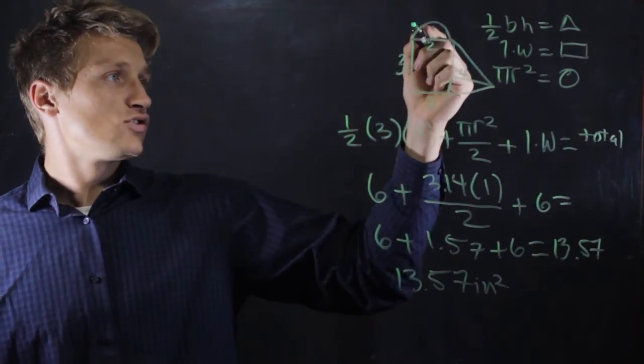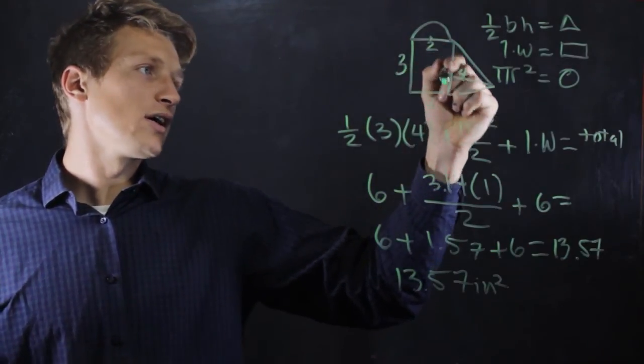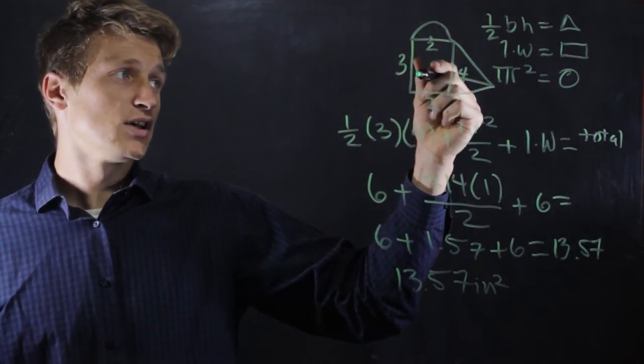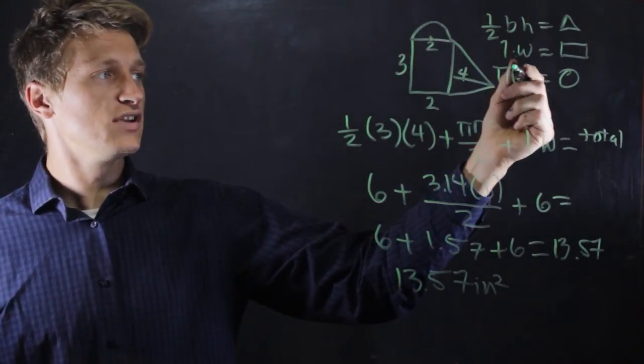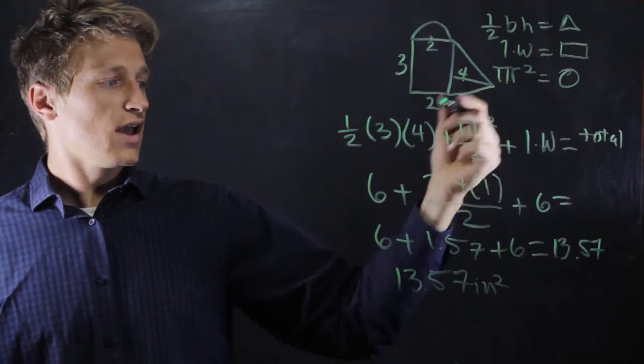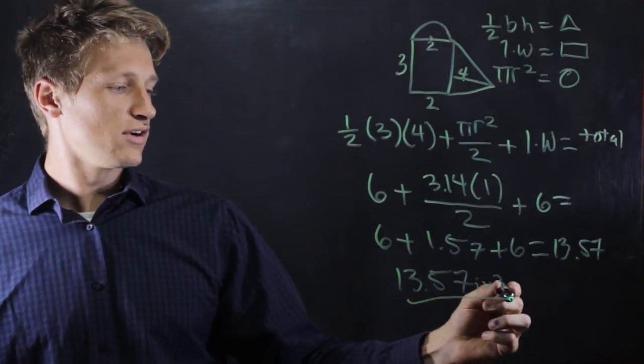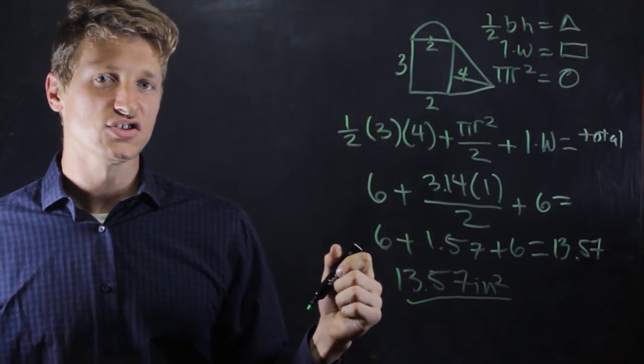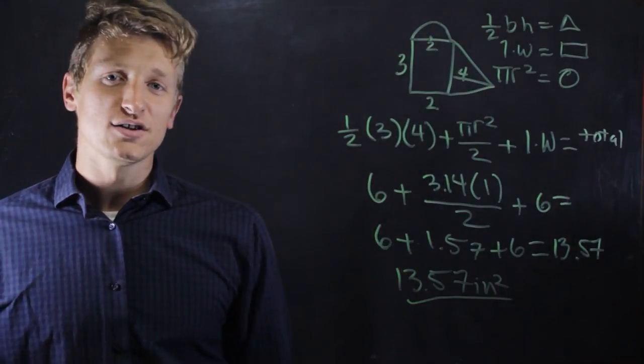So there you have it. To calculate the area of an irregular shape, you simplify it into regular shapes, break them down, add up the different areas like this, and you'll get your total here. The area of this irregular shape is 13.57 inches squared. I'm Tyler Locke, and this is how to solve equations with irregular shapes.